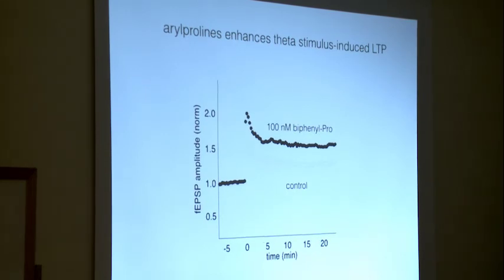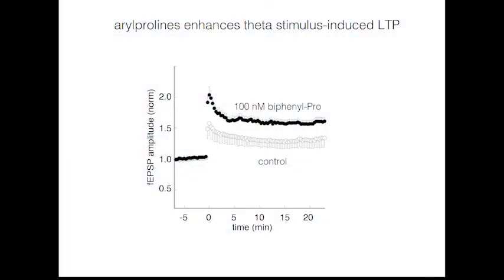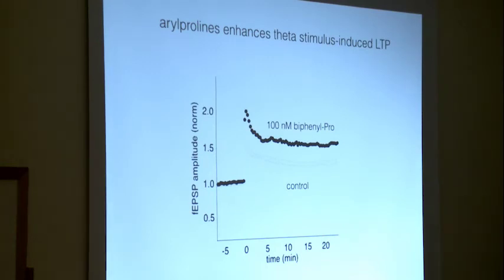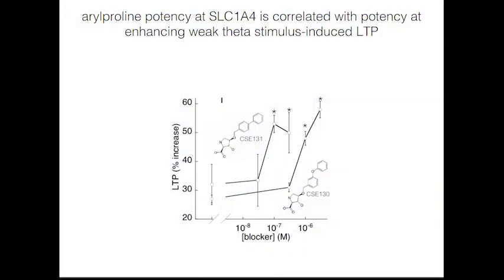What does this do to signaling in brain? Applying biphenylhydroxyproline to brain slices and looking at LTP in the hippocampus, a weak theta stimulus induces LTP, and adding the drug increases the amount of LTP seen. We also have data with a number of other analogs at different affinities for SLC1A4 that also enhance long-term potentiation, and their efficacy at enhancing LTP is correlated with their efficacy at blocking the transporter.